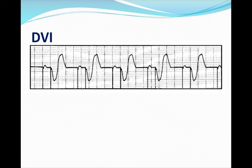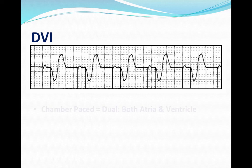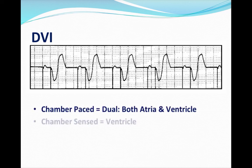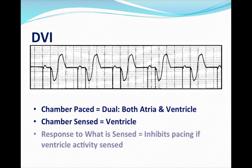DVI — the chamber being paced is dual, both atria and ventricle, so you can see pacer spikes in front of the P wave and the ventricle. The chamber being sensed is the ventricle, and when the pacer senses an impulse in the ventricle, the response is to inhibit.